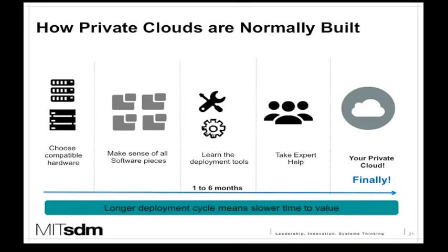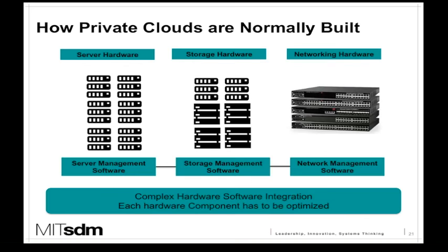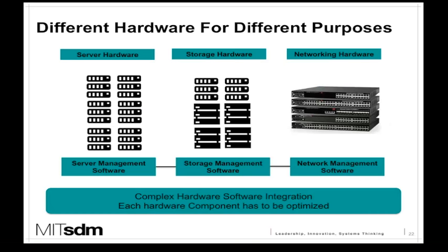The other piece of a traditional private cloud is that you need separate hardware for separate things — servers for compute, storage hardware for data, and network hardware for routers and switches. Coupled with each of these different types of hardware is the software that manages them. That leads to complex hardware-software integration. The other problem that exists is one of design.